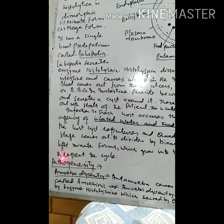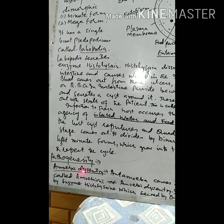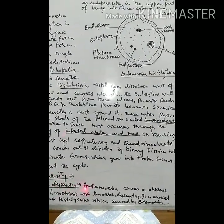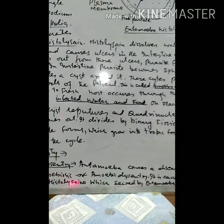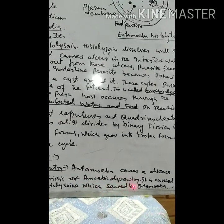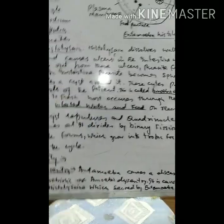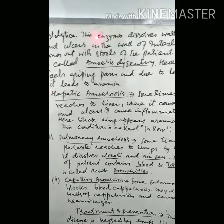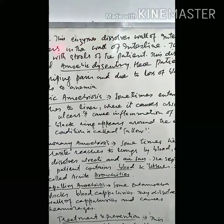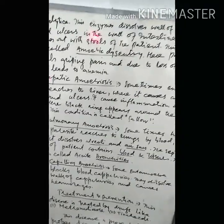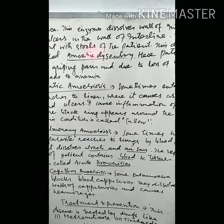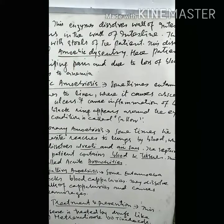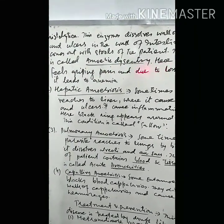Amoebic dysentery is caused by histolysine secreted by Entamoeba histolytica. In the intestine, histolysine dissolves the intestinal walls and results in ulcers. Due to these ulcers, loss of blood occurs, passing with stools — this is called amoebic dysentery. It also causes gripping pain in the abdomen and leads to anemia due to shortage of blood.